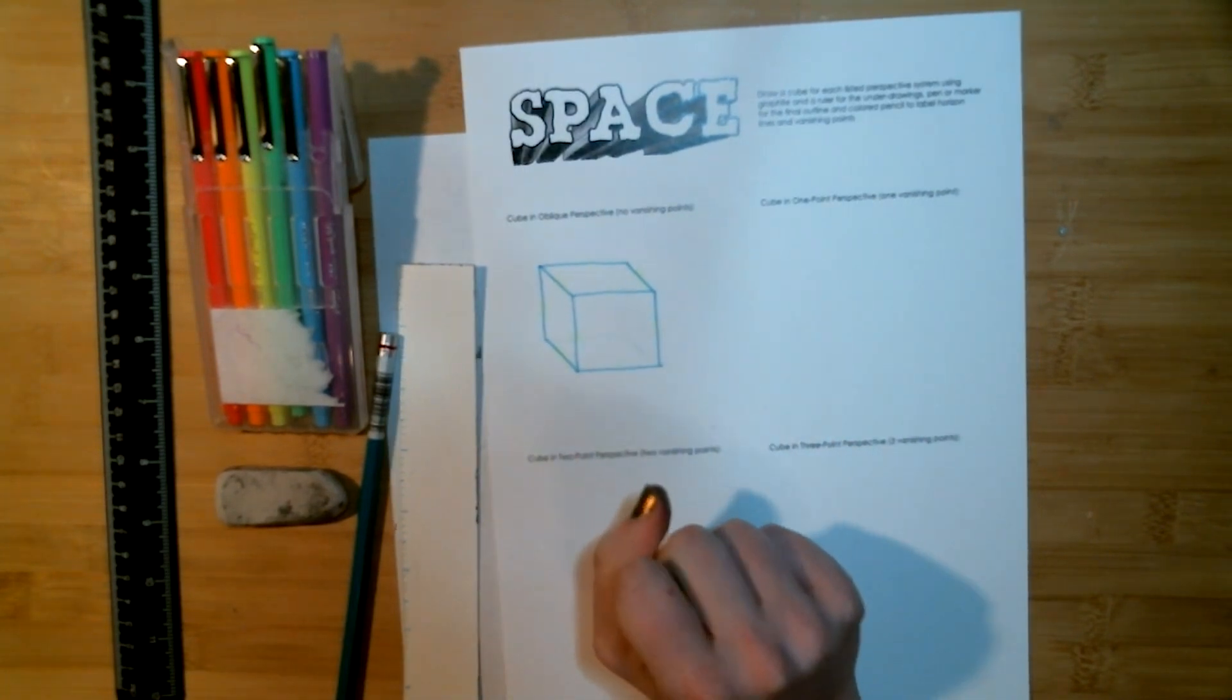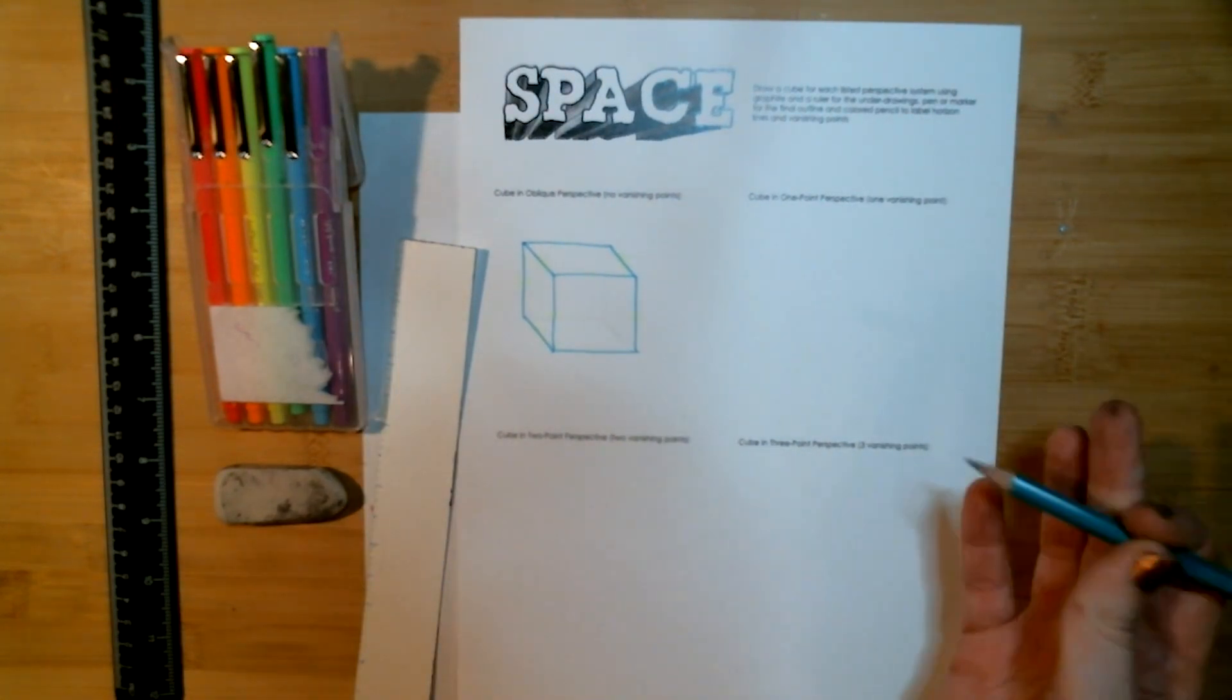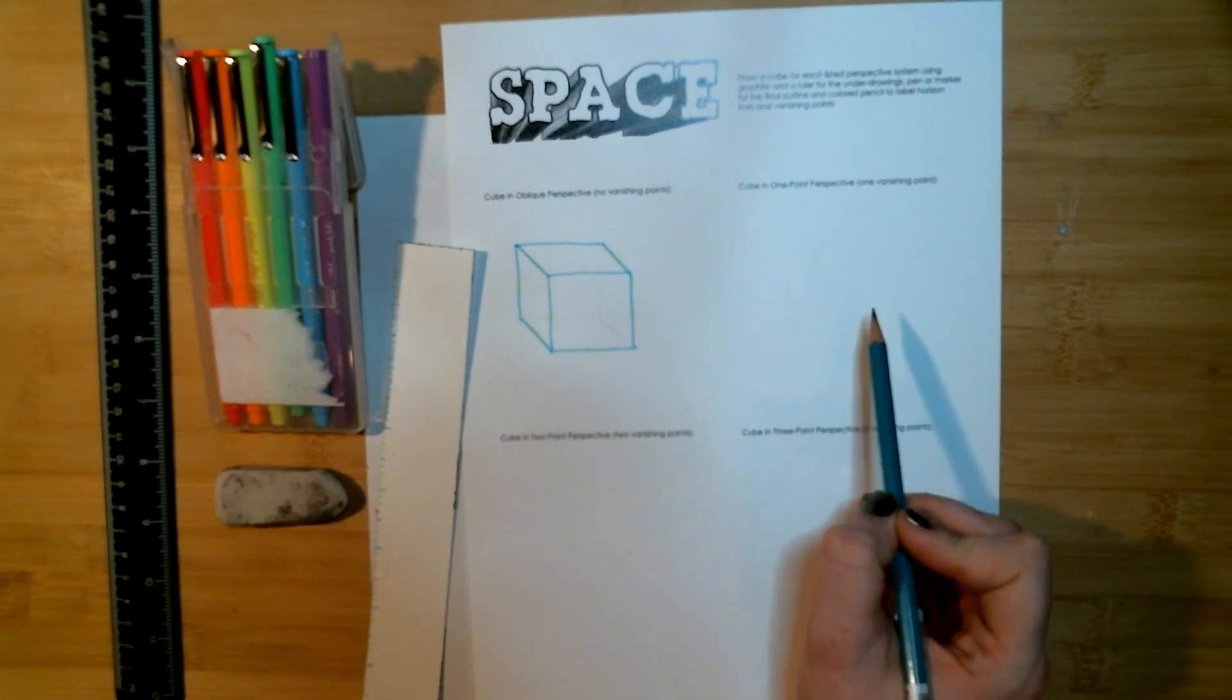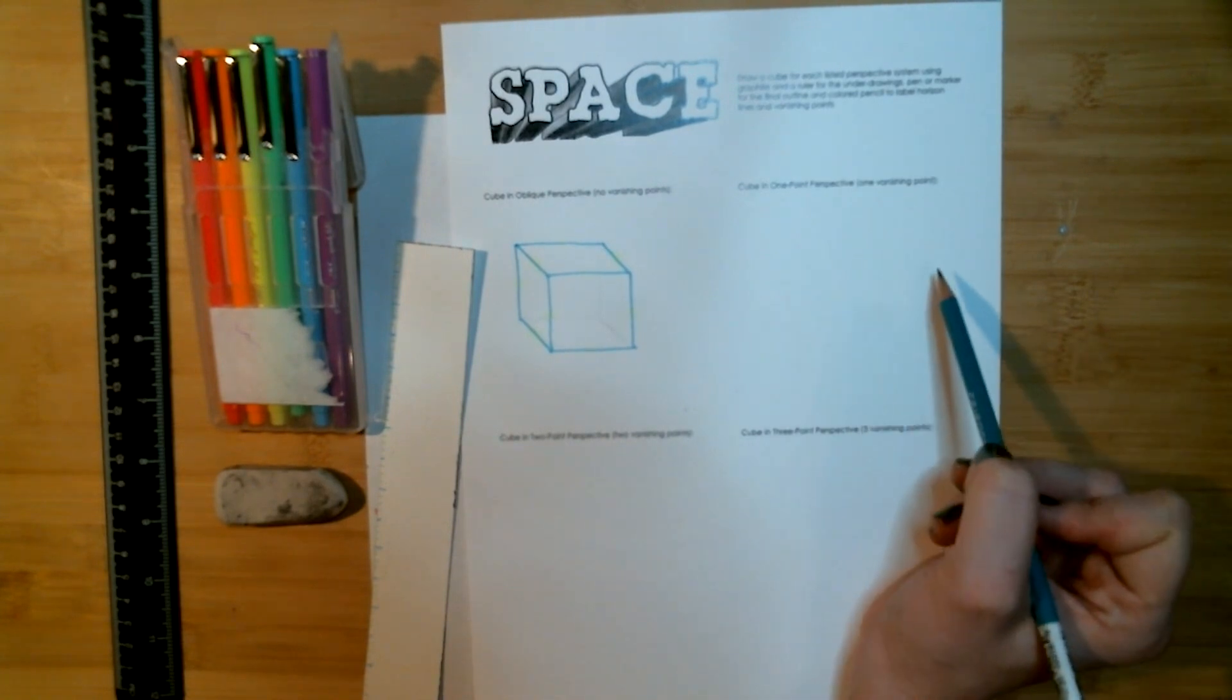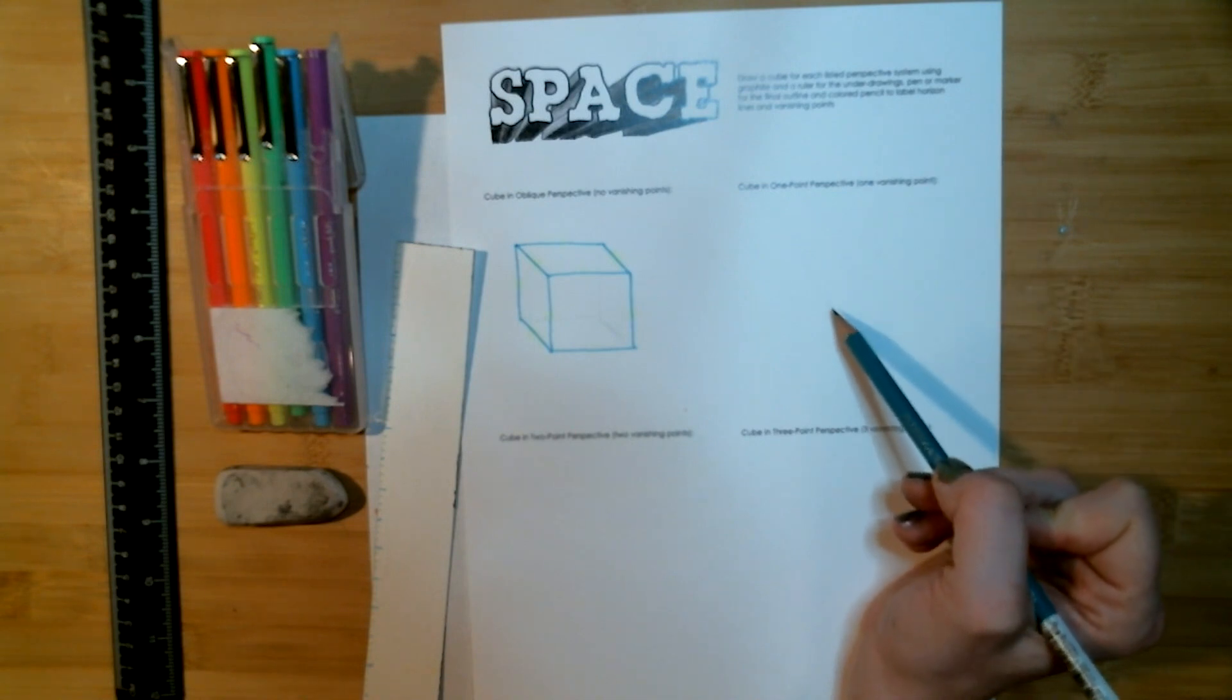I will carry that over to here. The first thing I want to do for one point perspective is I'm going to draw and label my horizon line and my vanishing point. I'm going to choose a vanishing point slightly to the side and I'm also going to move my horizon line up so that it's as if I am looking down at my cube when we draw it.